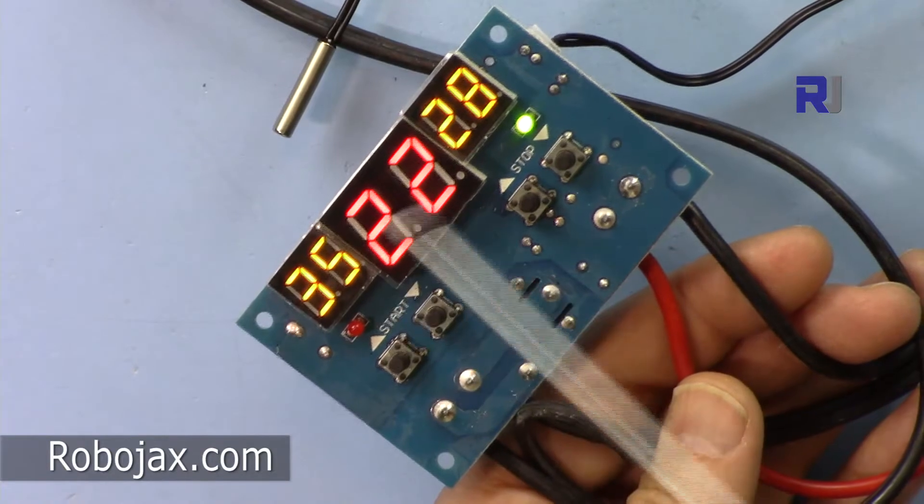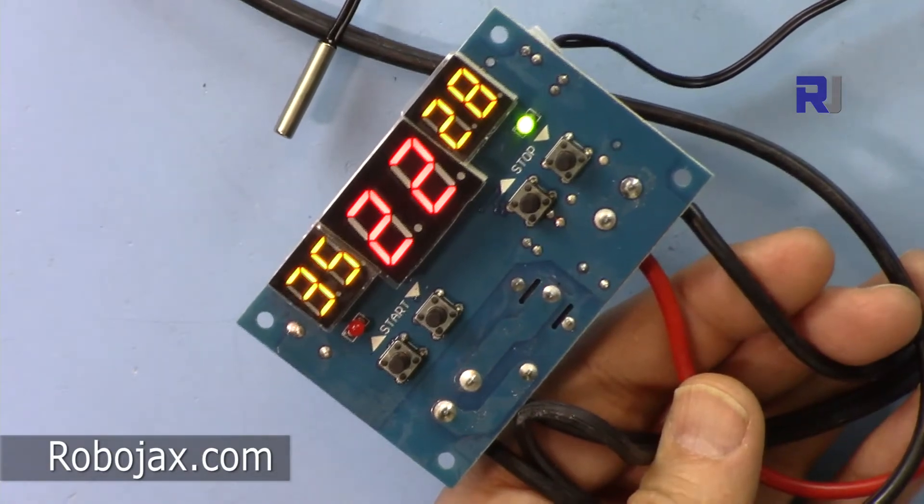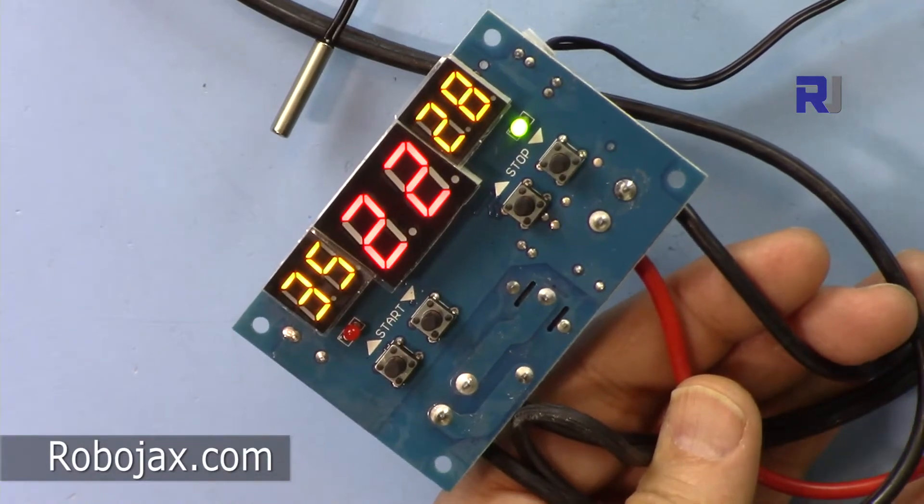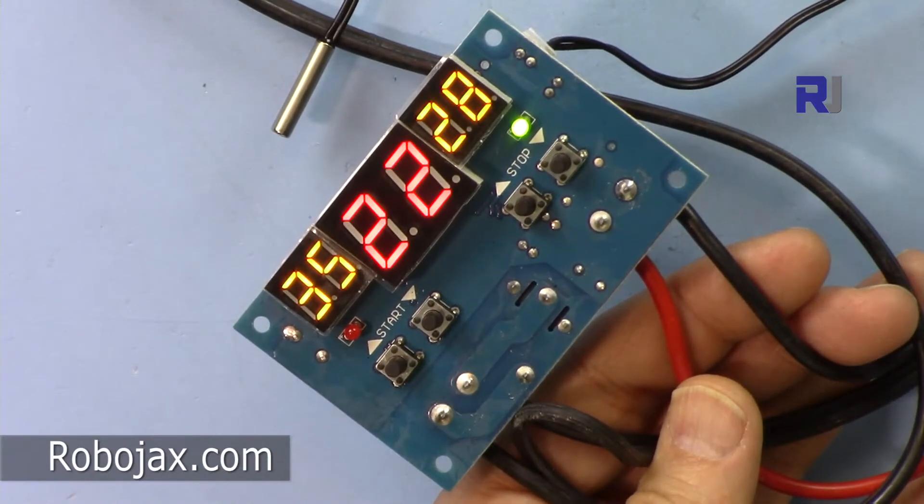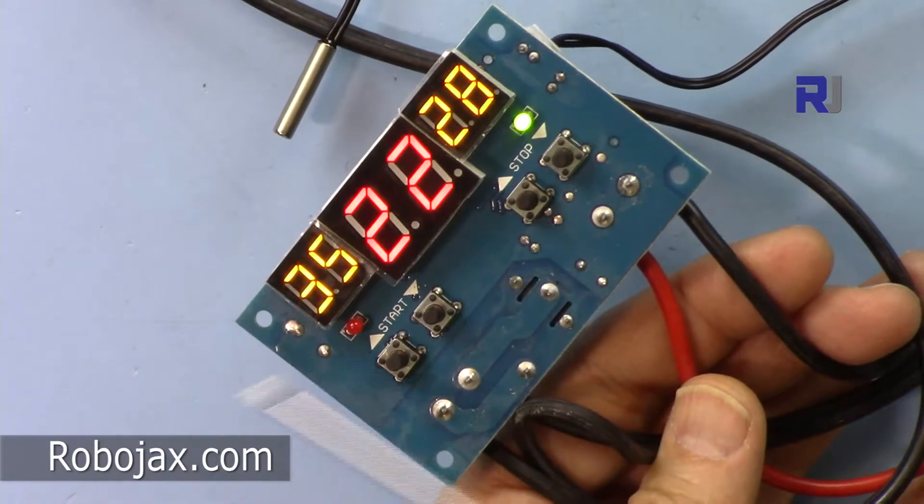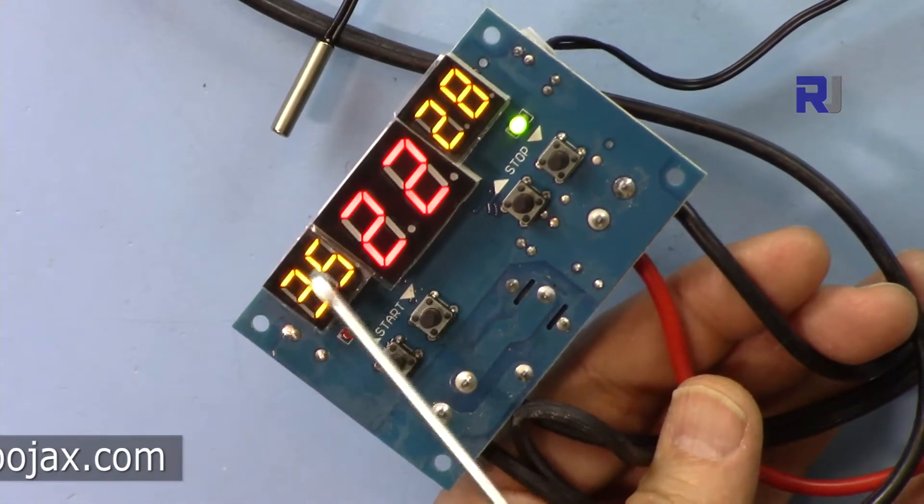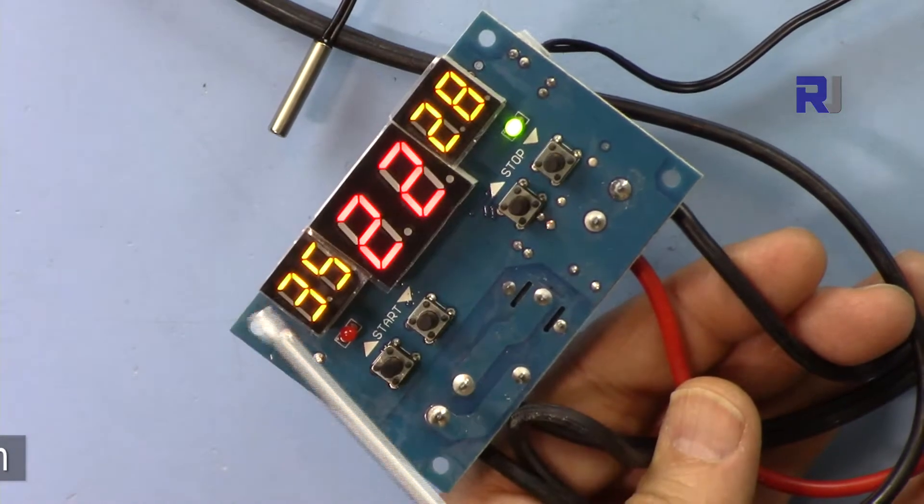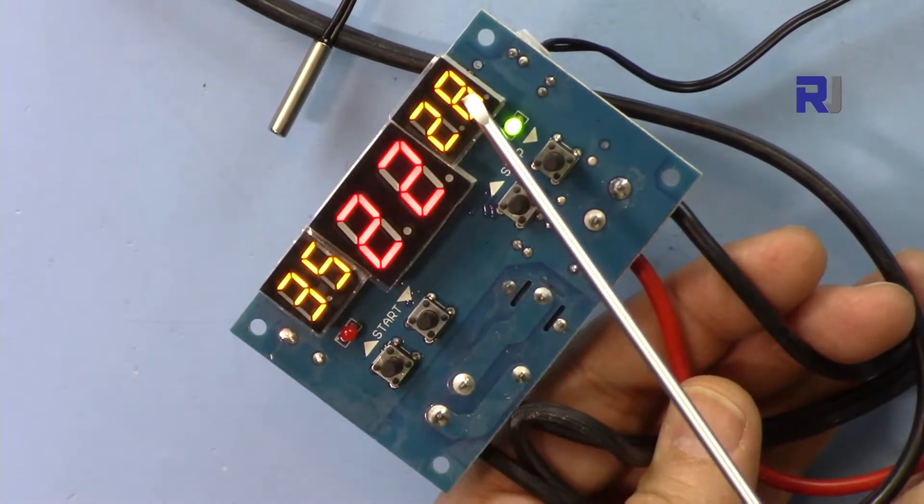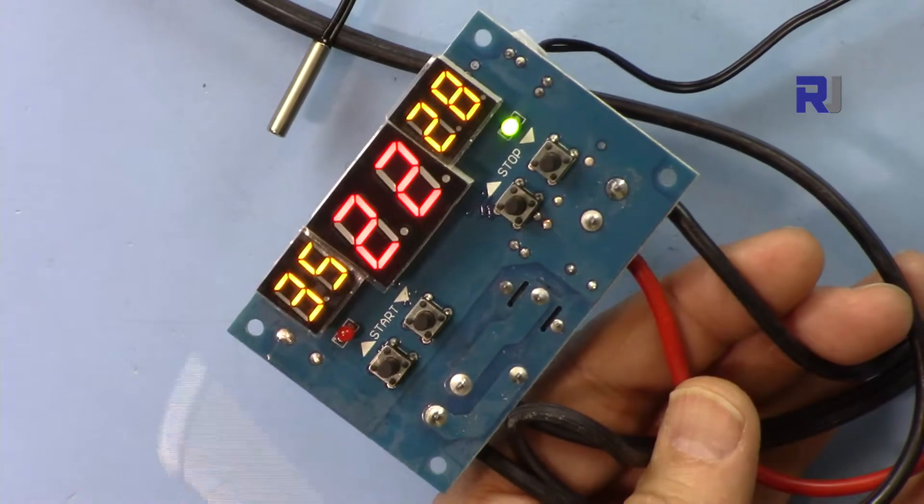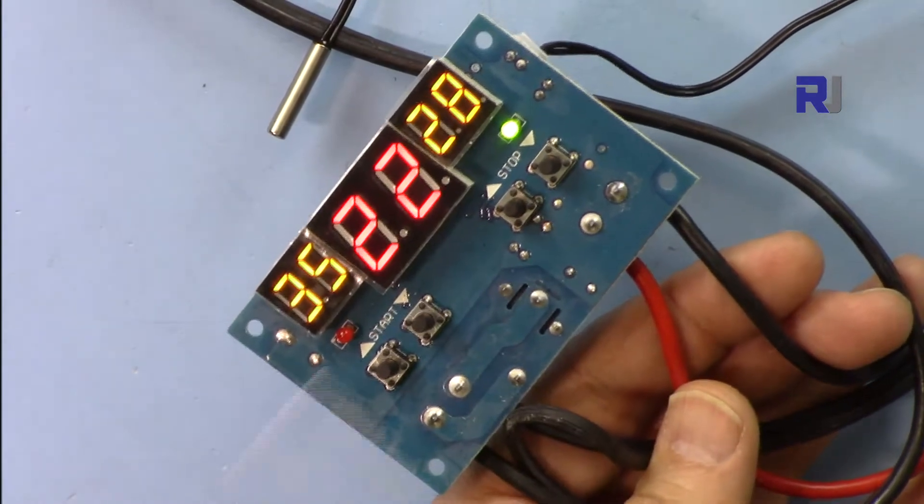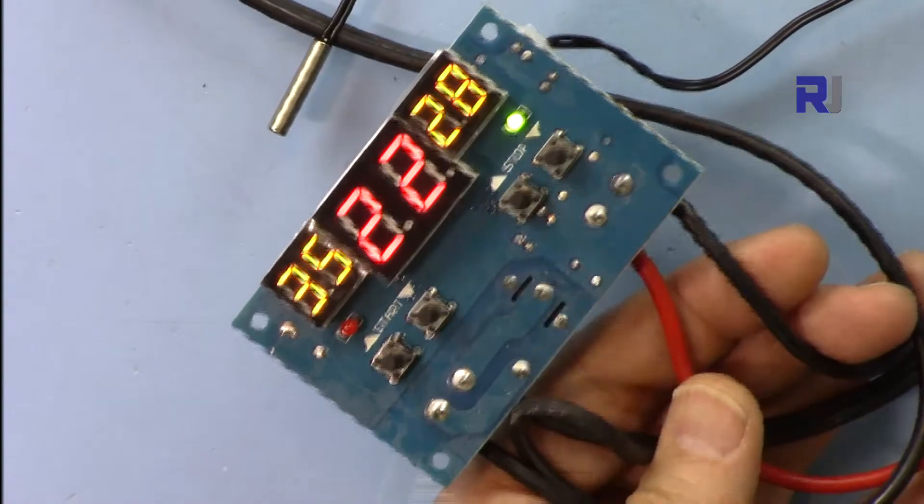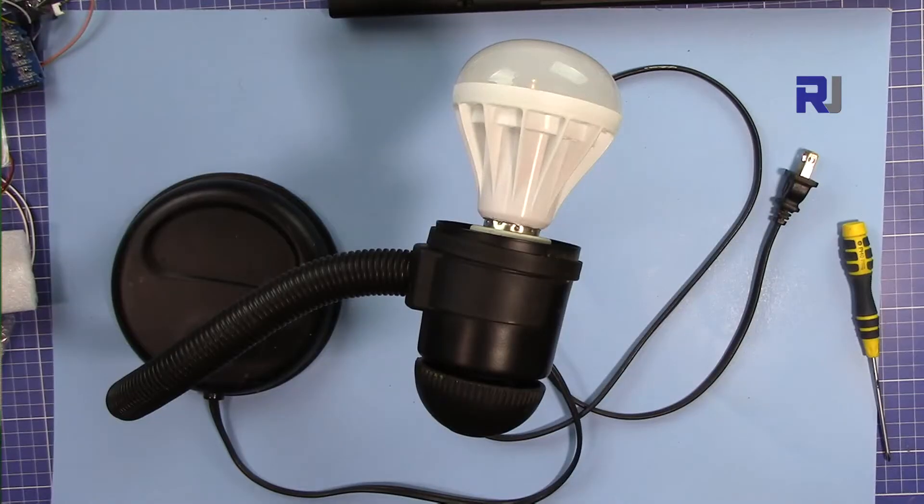On the other hand, if you put the lower temperature here and the higher temperature here, if this is lower than this temperature, then this will act as a heater so you can control heat. Simply by selecting the right temperature it will work for you.